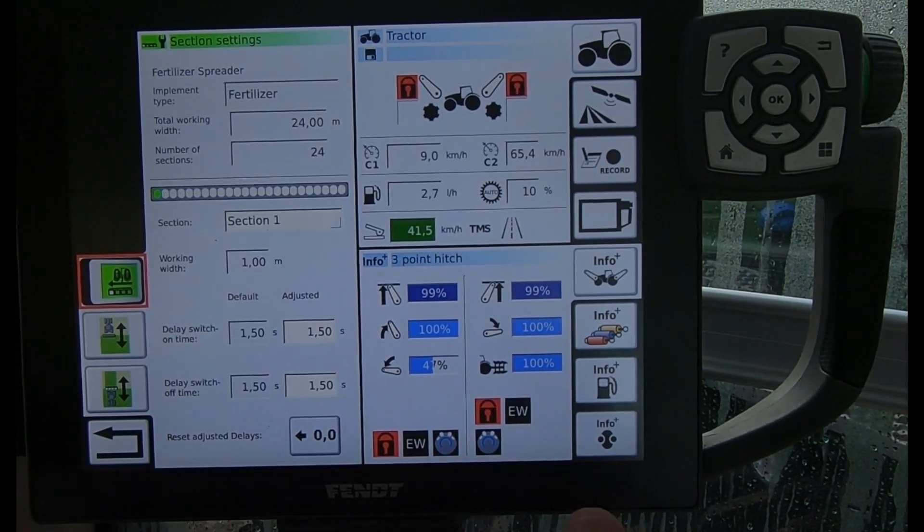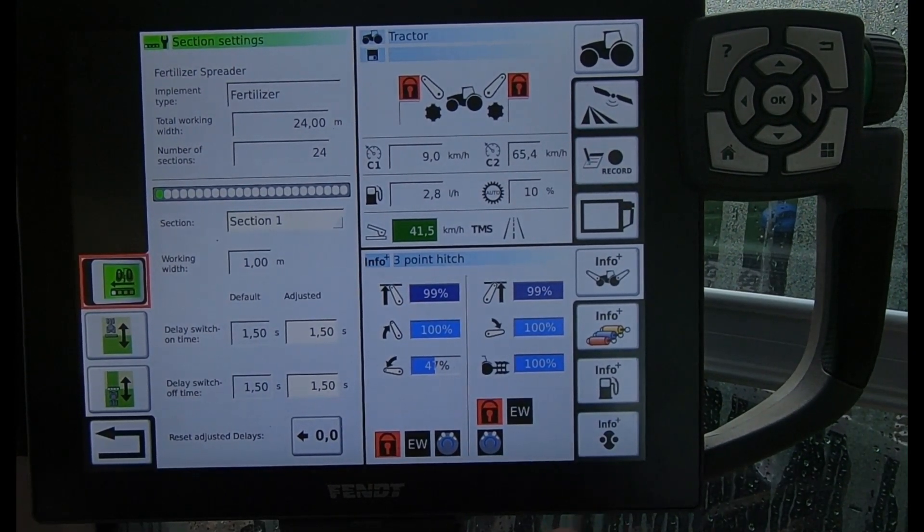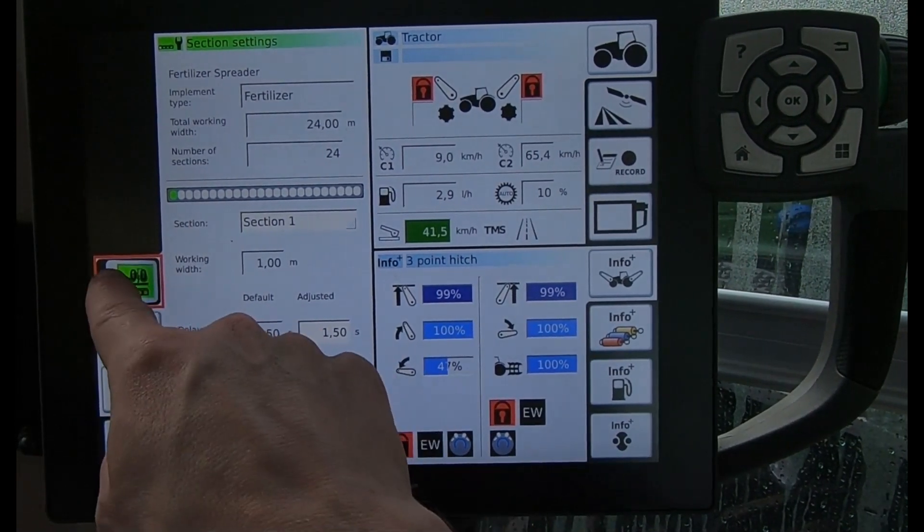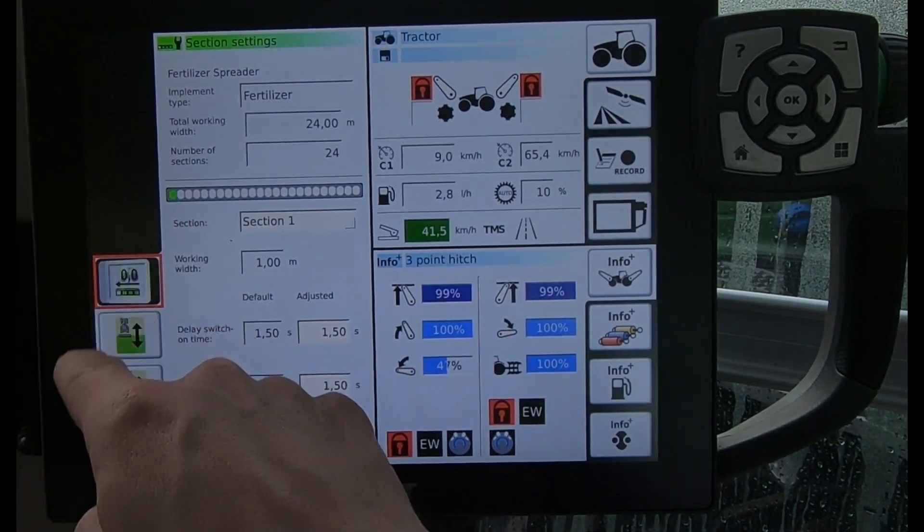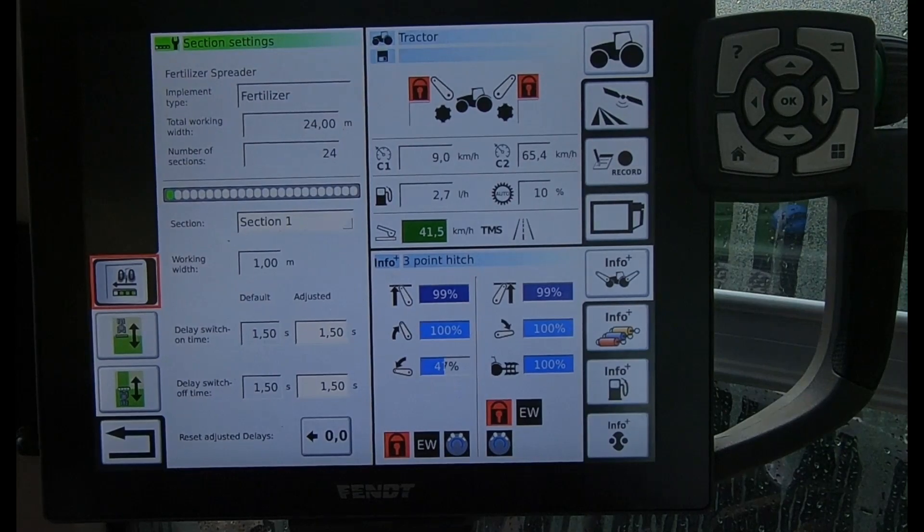If you've got an implement that's still spraying or spreading when you were stationary, then we just need to toggle this switch to pick up on that feature there.